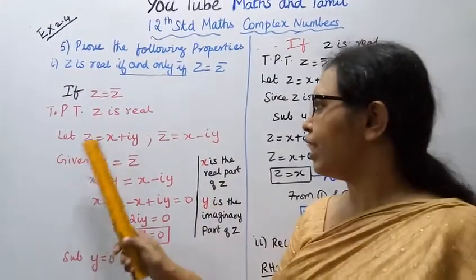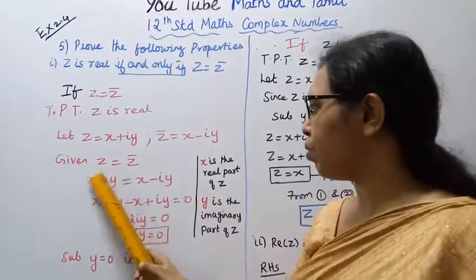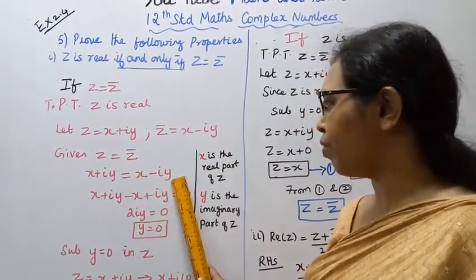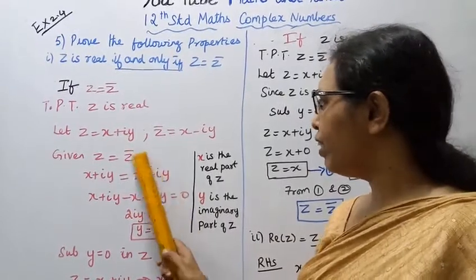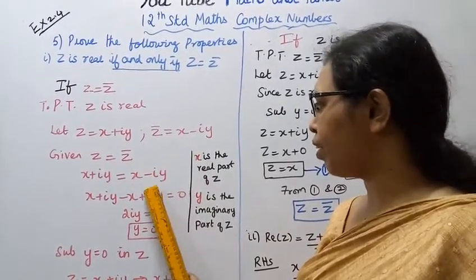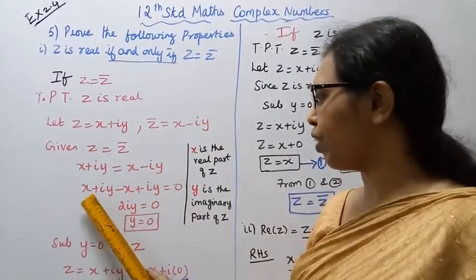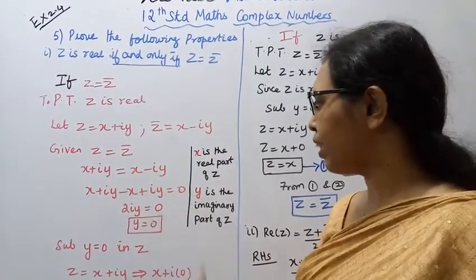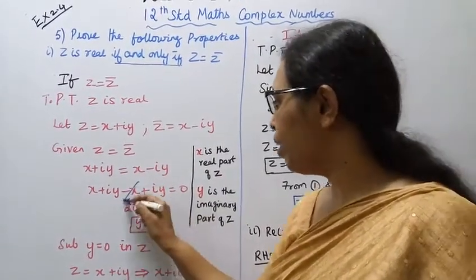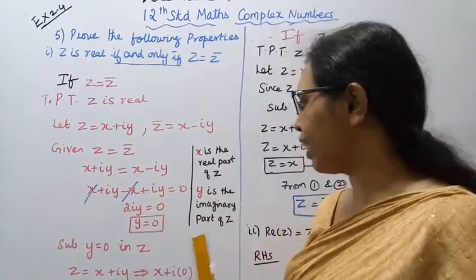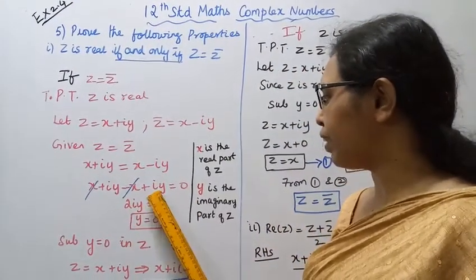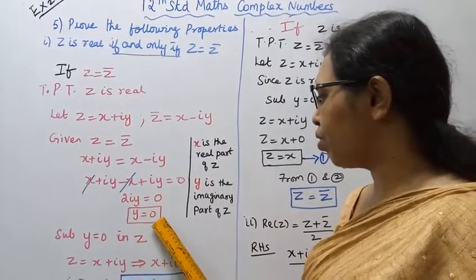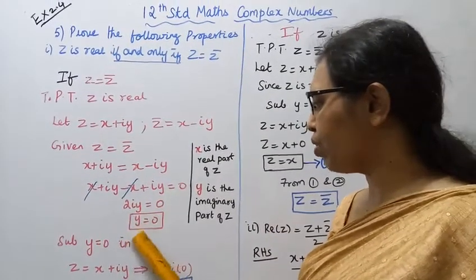If z equals z̄, then x plus iy equals x minus iy. The left hand side equals the right hand side: x plus iy equals x minus iy. Rearranging, x minus x cancels, giving iy plus iy equals 0, so 2iy equals 0.